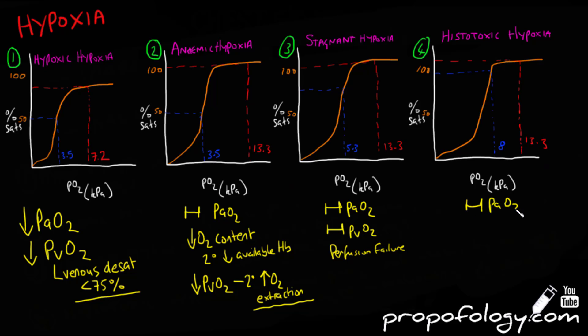Finally, in histotoxic hypoxia, you'll see that the PaO2 is normal, 13.3, but cells are unable to utilize the oxygen, like we've said. So there's high venous saturations because the oxygen extraction is a lot less because the mitochondria are not using up your arterial oxygen as much.